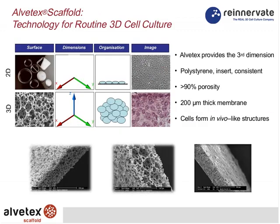Alvatex is created by taking polystyrene — the same material as conventional plastic receptacles — and changing its geometry to create a highly porous three-dimensional scaffold. It is 90% porous, meaning 90% of Alvatex is actually space into which cells can grow and occupy, as seen here growing inside the material.